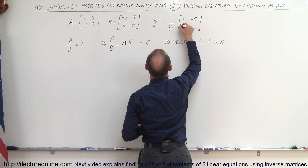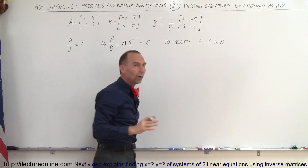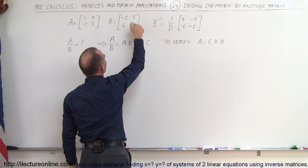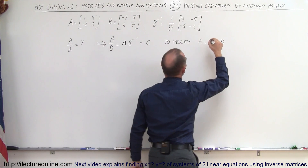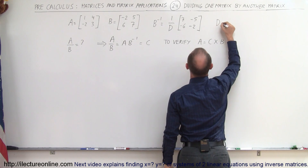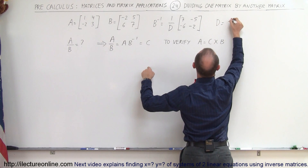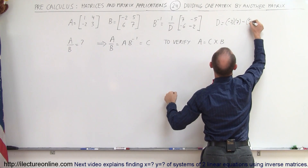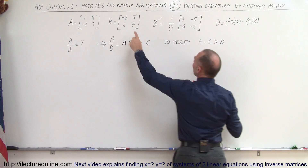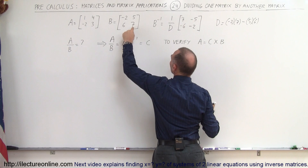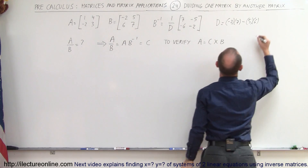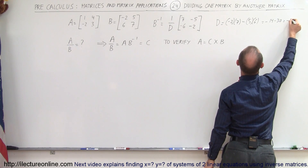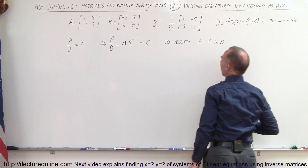We also change the signs of 5 and 6, so those become minus 5 and minus 6. Now, the determinant is these two elements multiplied together minus these two elements multiplied together, so D equals negative 2 times 7 minus 5 times 6, which gives us minus 14 minus 30, equal to minus 44.